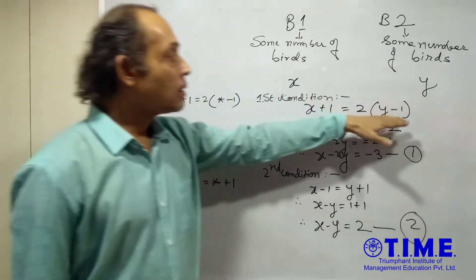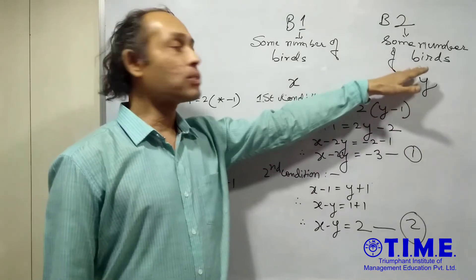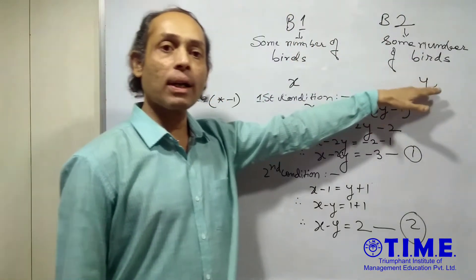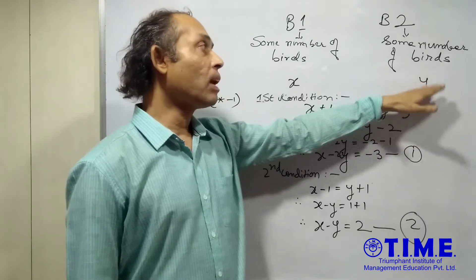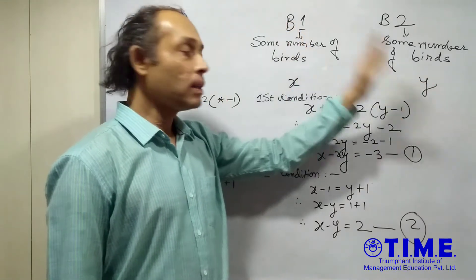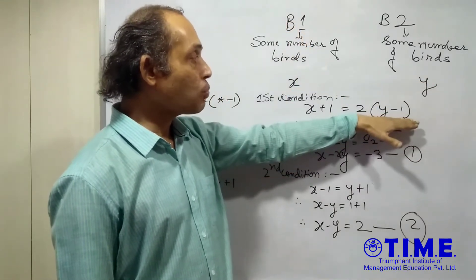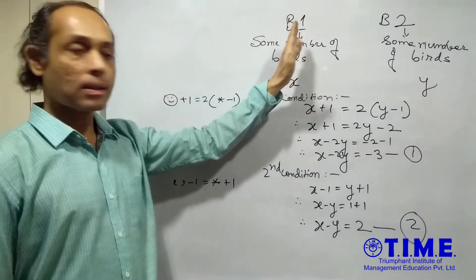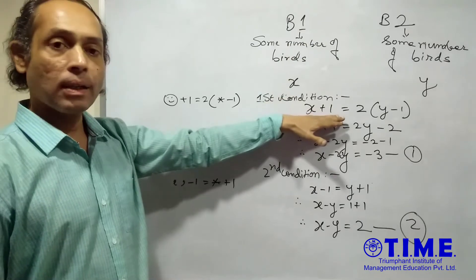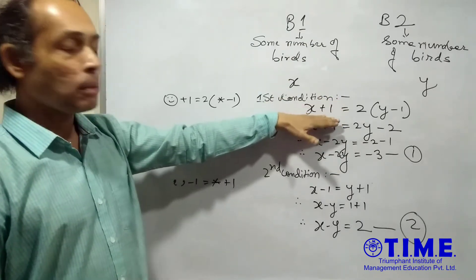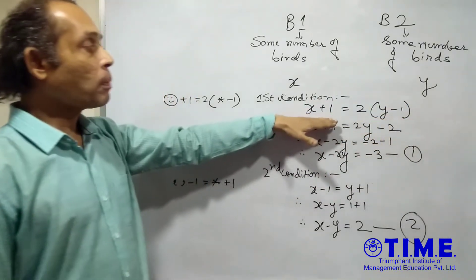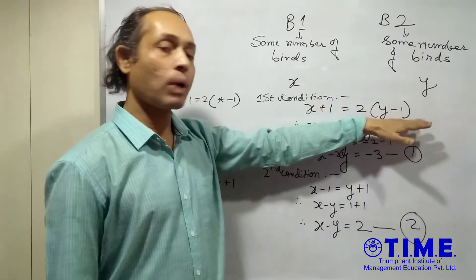We will immediately subtract one from here because one bird flies from here. That means one is less over here now. The Y birds, one flies from here to the branch 1 so that it becomes Y minus 1. And here, since one bird is added over here, so we will get X plus 1 here. And this particular number they say is twice the number now at branch 2.